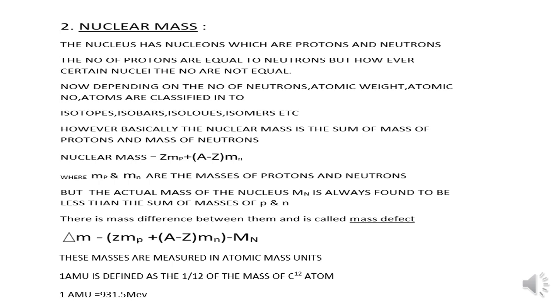However, basically the nuclear mass is the sum of mass of protons and mass of neutrons. It is given by the formula nuclear mass equals Z Mp plus A minus Z Mn, where Z is the atomic number and A minus Z is the number of neutrons present in the nucleus. Mp and Mn are the masses of protons and neutrons.